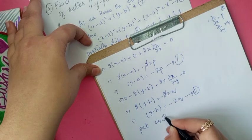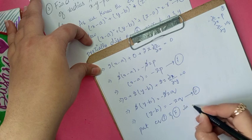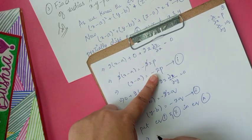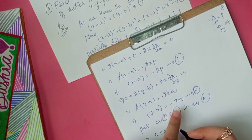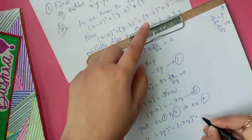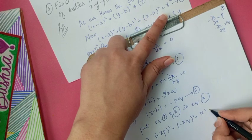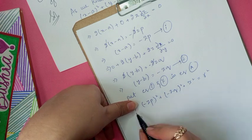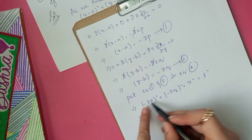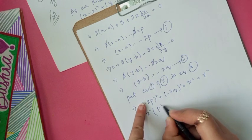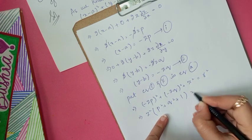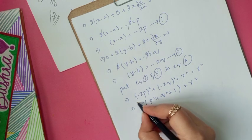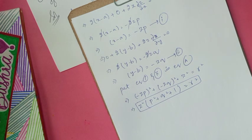Now we substitute Equations 1 and 2 back into the main sphere equation. Replacing x minus a with minus zp and y minus b with minus zq, and noting z minus 0 equals z, we get: (zp)² + (zq)² + z² = r². Taking z² common, this simplifies to z²(p² + q² + 1) = r². This is our required differential equation for all spheres of radius lambda with center in the xy plane. Please subscribe and share the channel, thank you so much.